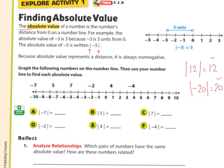In your notes, write down these questions: A through F. A: the absolute value of negative 7 equals 7, because it's 7 units from zero. B: the absolute value of 5 equals 5, because it's 5 units from zero. C: the absolute value of 7 is 7. D: the absolute value of negative 2 is 2, because negative 2 is 2 units from zero. E: the absolute value of 4 is 4. F: the absolute value of negative 4 is also 4.